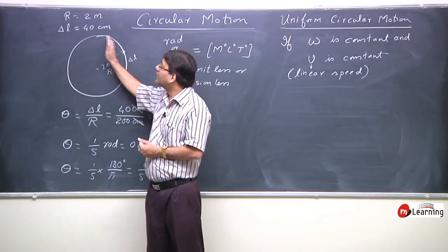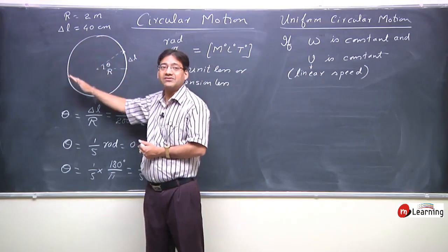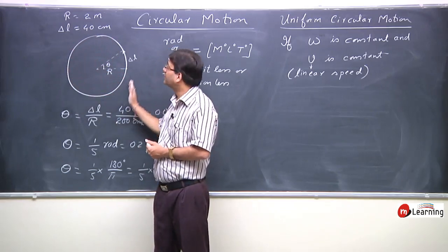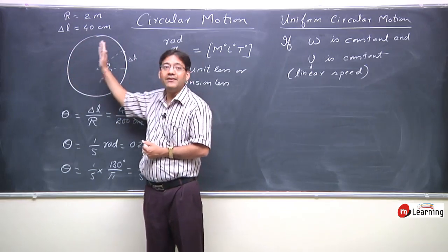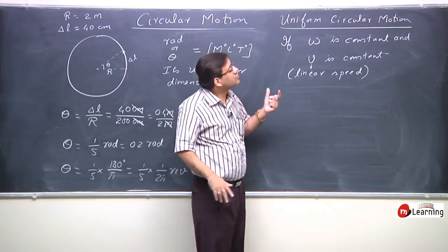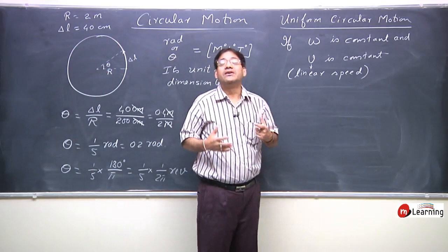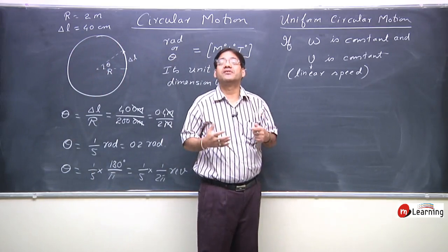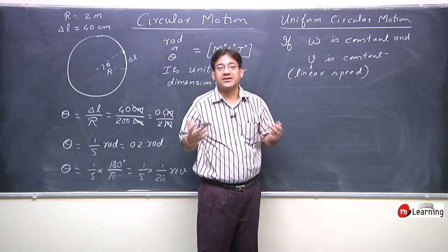Because velocity is a vector quantity which keeps changing direction on a circular path, we refer to the magnitude as linear speed. So we call it Uniform Circular Motion.